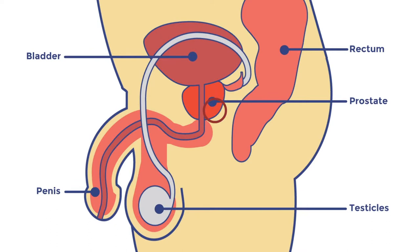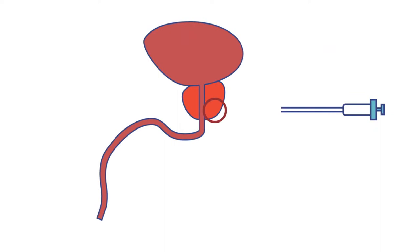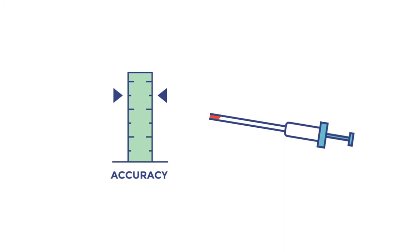If prostate cancer is suspected, a special type of MRI scan can be used to visualise the prostate gland and may help identify potentially cancerous areas. Samples or biopsies from these potentially cancerous areas can then be taken, and taking biopsies in this way can in turn improve the accuracy of diagnosing prostate cancer.